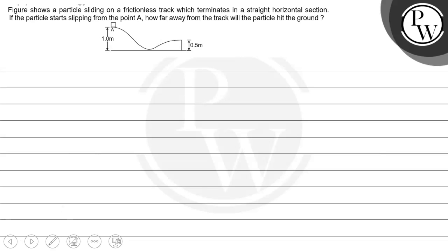Hello everyone. Let's read the question. The question says that figure shows a particle sliding on a frictionless track which terminates in a straight horizontal section. If the particle starts slipping from point A, how far away from the track will the particle hit the ground?